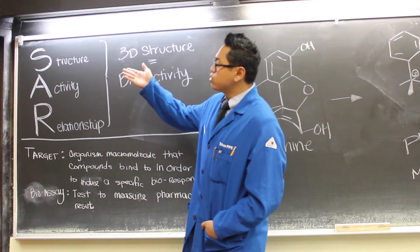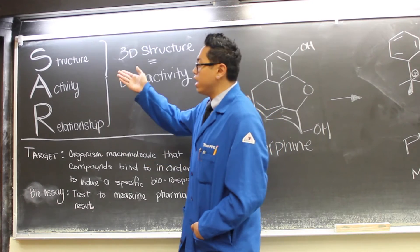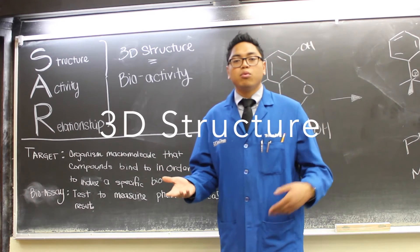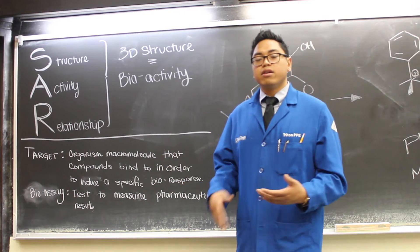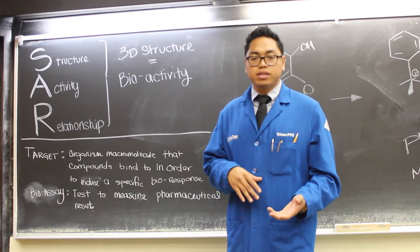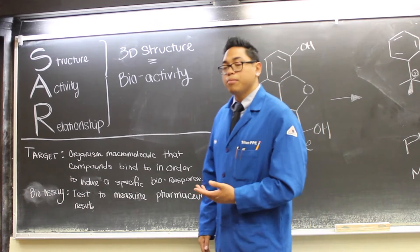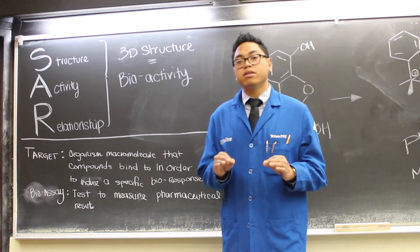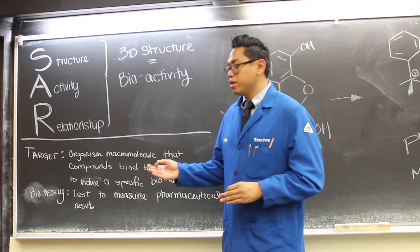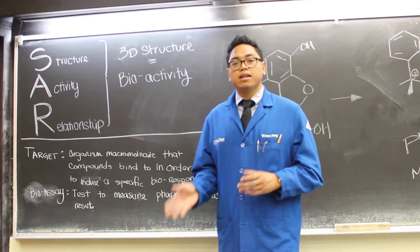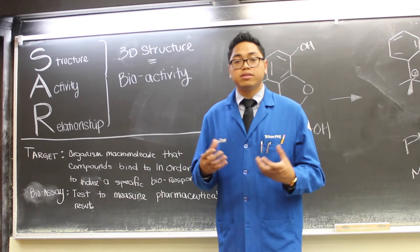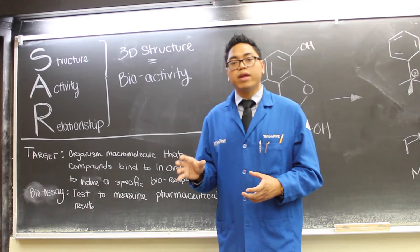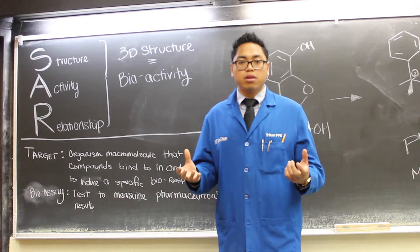This technique is known as structure activity relationship studies or SAR studies. SAR studies link the 3D structure of a molecule with its bioactivity which is later studied to produce other compounds of similar activities. In order for this to happen we must identify a target or a macromolecule within an organism that elicits a particular response which is later then assayed through various means. This is a reiterative process that allows us to gain insight to what's known as a pharmacophore which is the essential backbone and the very simple molecule that produces a similar response as to its general class of molecules.